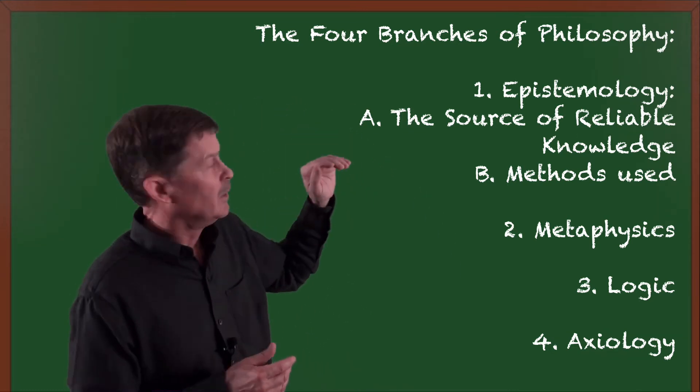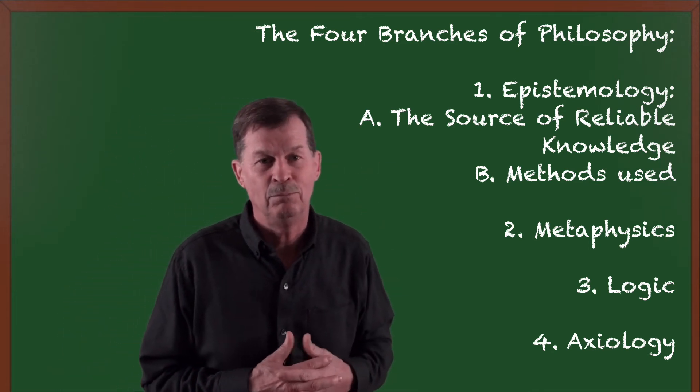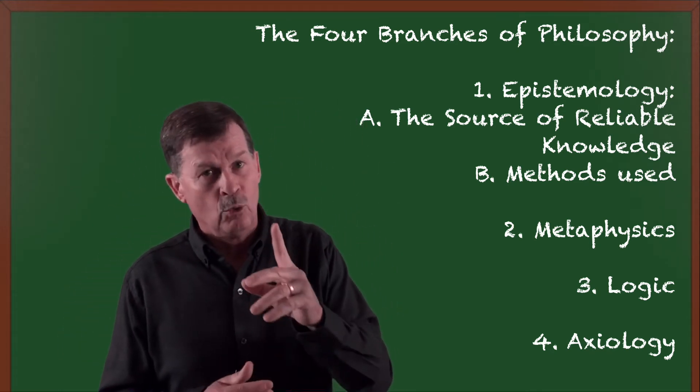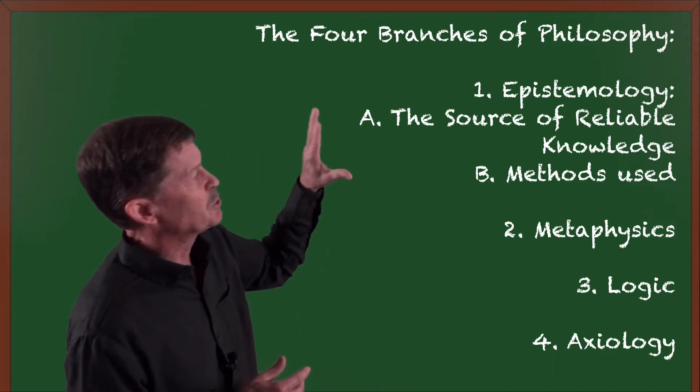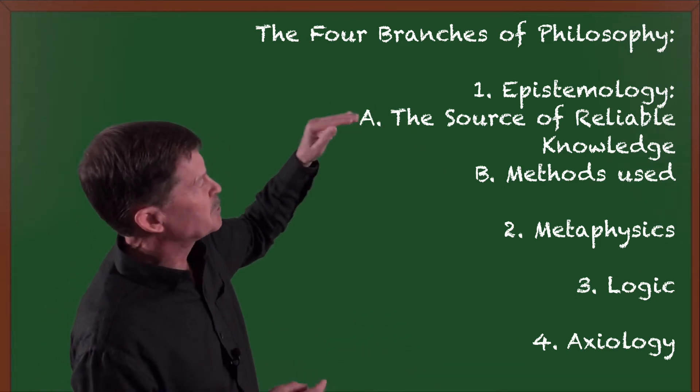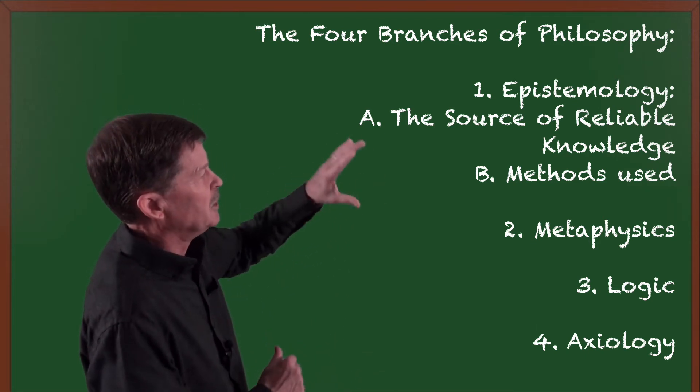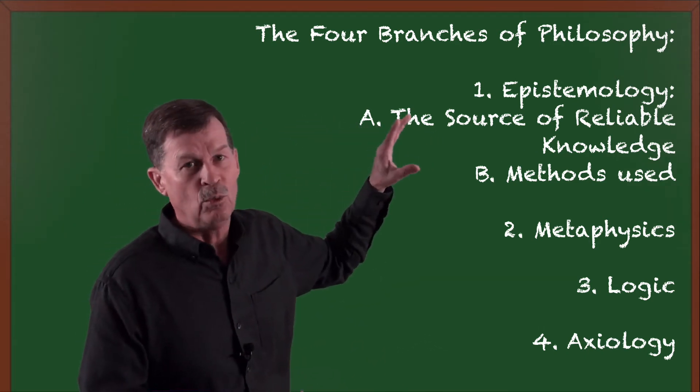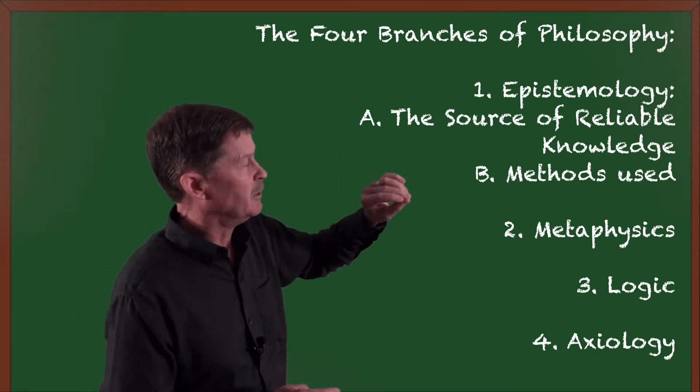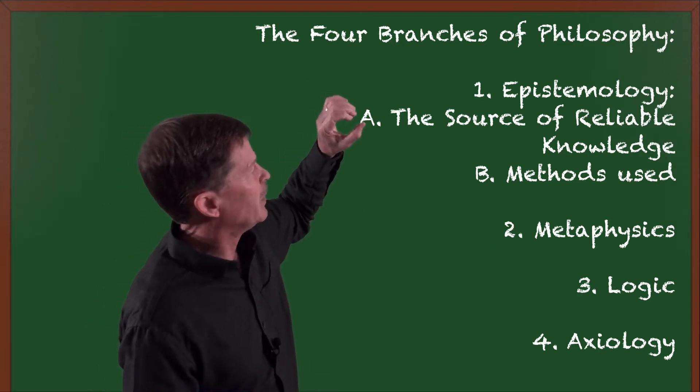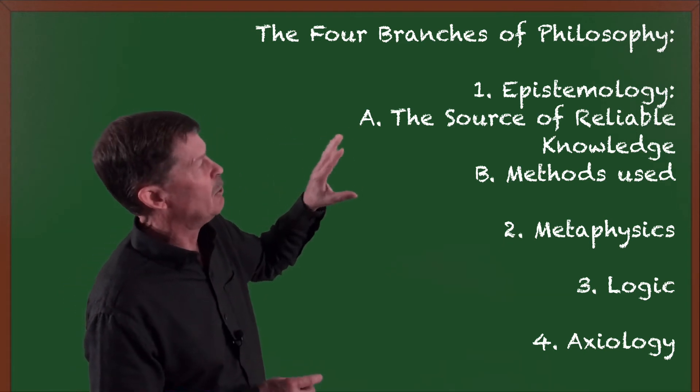So those are the four general categories of sources of reliable knowledge. Intuition, authority, logic, and empirical knowledge. We're going to go over those again, coming back up soon. But that is epistemology. That's epistemology A. Epistemology B, I've divided into two sectors of epistemology. The second one is B, which is the methods that I use to get to reliable knowledge. In other words, first I choose my source of reliable knowledge, then I choose my methods of how to get there.